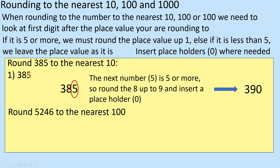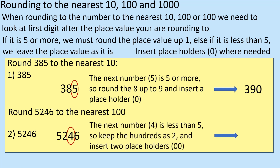And 5,204 rounded to the nearest hundred — the hundreds digit is this one, so look at the one after it, and the one after it is a four, so that's going to remain as it is. So you've got 5,200 — it stays as 5,200 because you need the two zeros at the end.